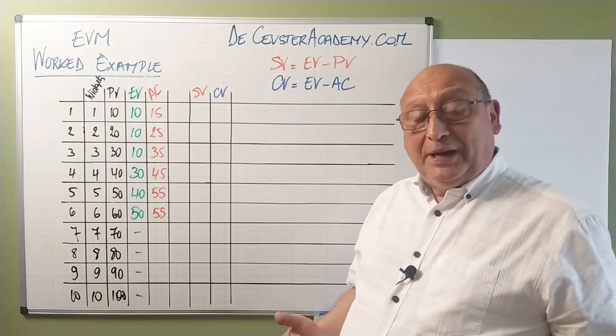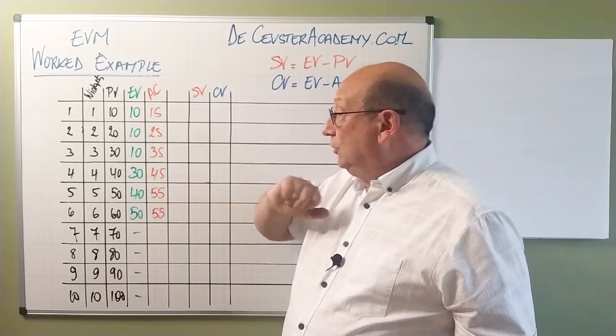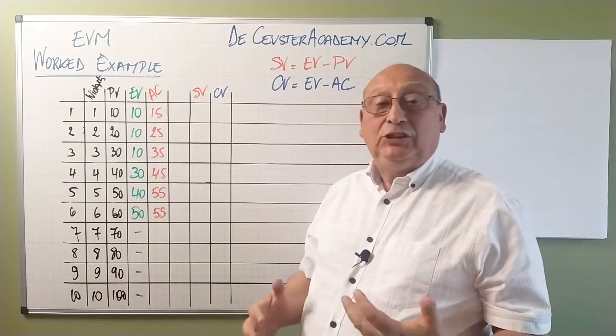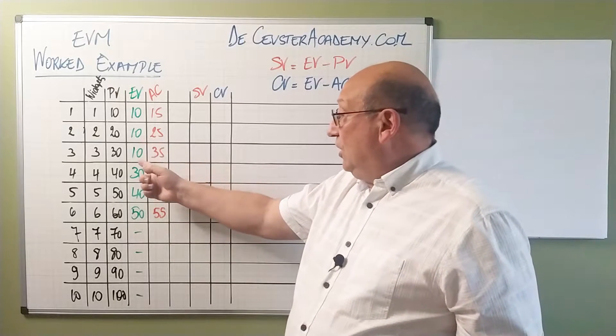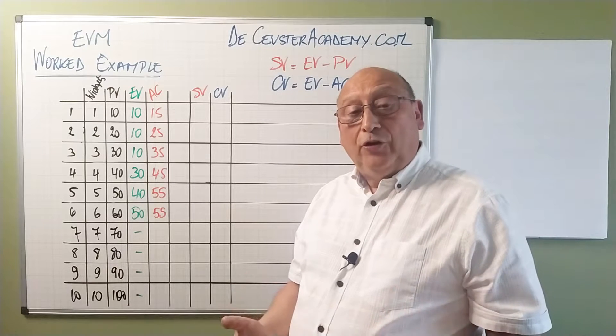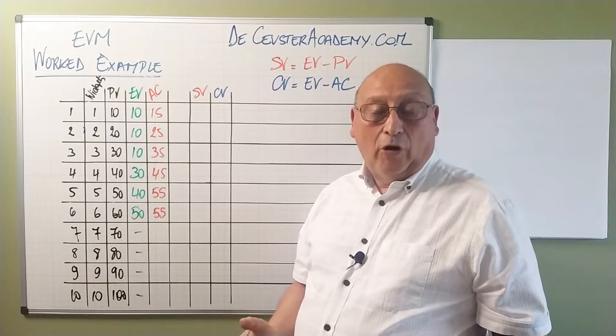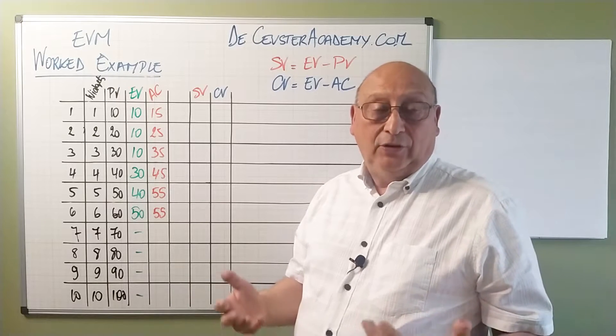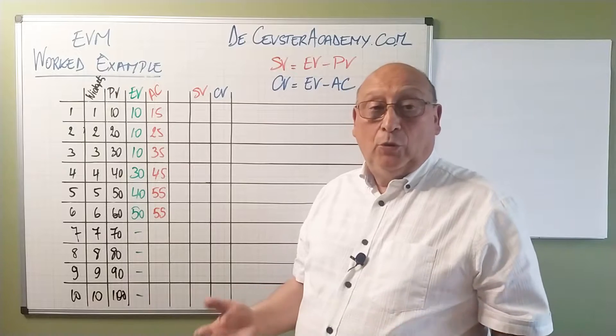From our project manager I get the following information. For the earned value period one I earned the value of 10k which means I made one widget. Over the next two periods we didn't create anything extra, so the earned value stays constant. We only created one widget. What went wrong we have to see with the team why this happened.